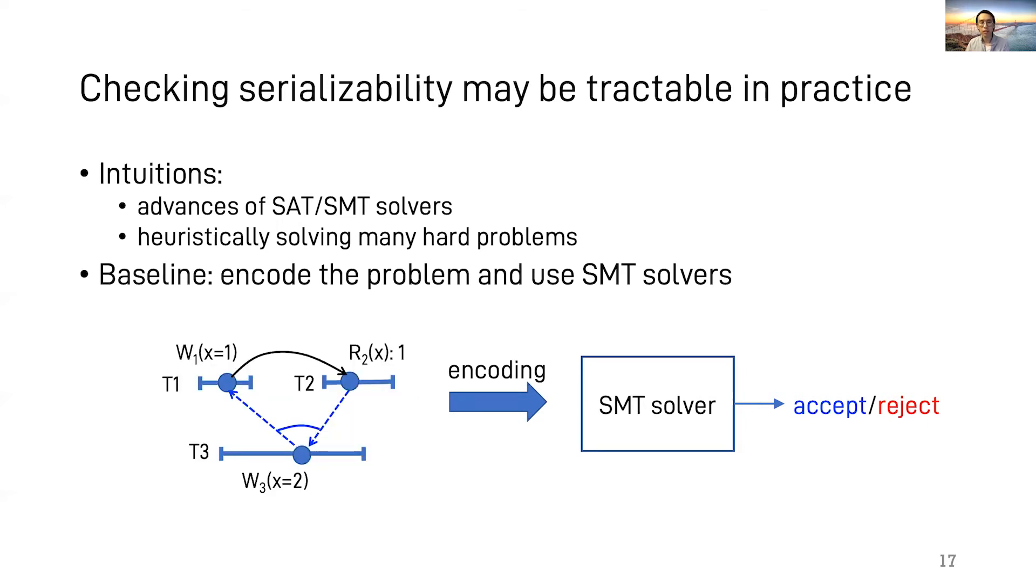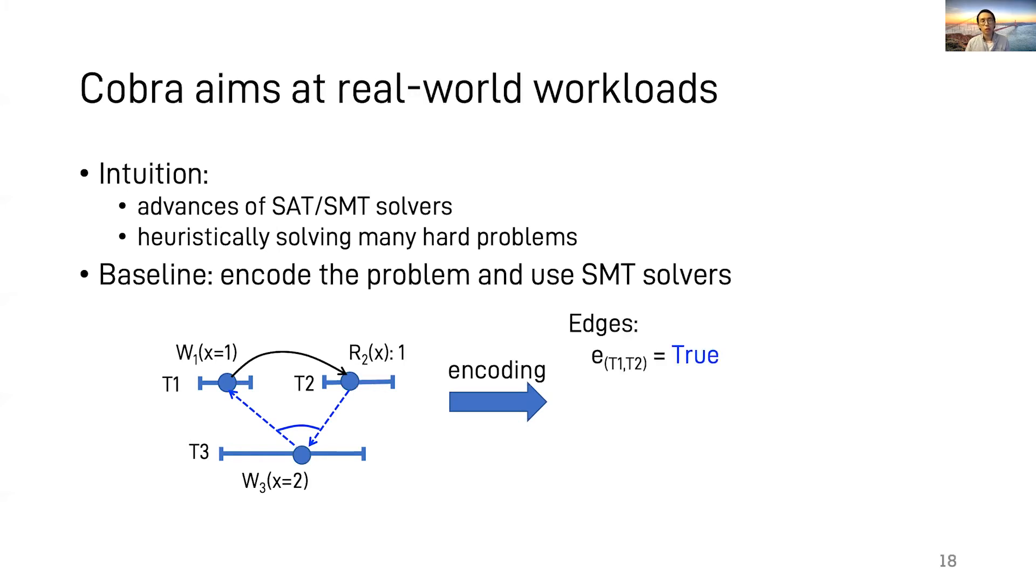As an example, let's encode our simple polygraph. First, we encode edges. For a possible edge from transaction i to transaction j, we assign a Boolean variable. True means such an edge exists. For example, the edge from T1 to T2 in this case.